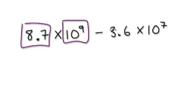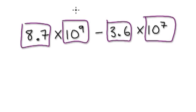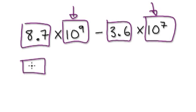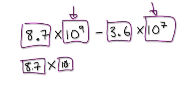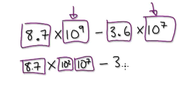So here you've got this number times this number, take away this times this. So what you do, break this up to get it to be the same as this. So visualize it as 8.7 times 10 to the power of 2, and then times 10 to the power of 7, take away 3.6 times 10 to the power of 7.